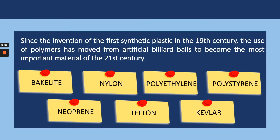Since the first synthetic plastic was invented in the 19th century, we have come a long way in the 21st century where polymers have become the most important material of the century. Bakelite, Nylon, Polythene, Polystyrene, Teflon, Kevlar, Nomex are all examples of some of these synthetic polymers.